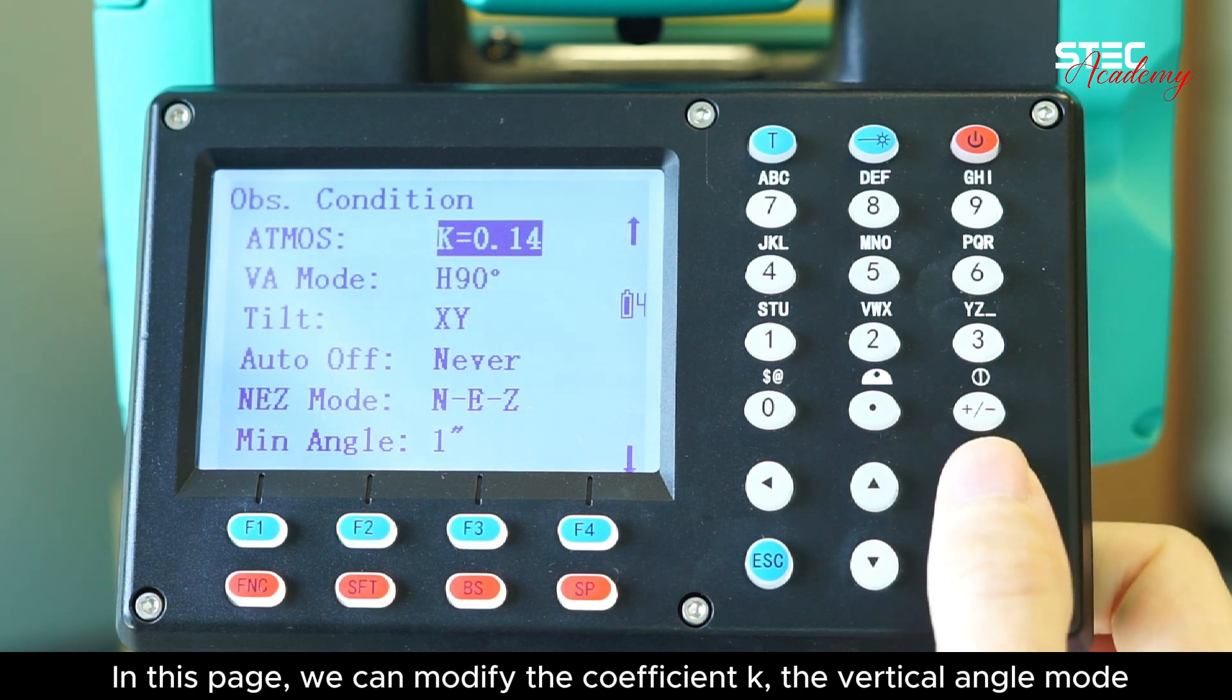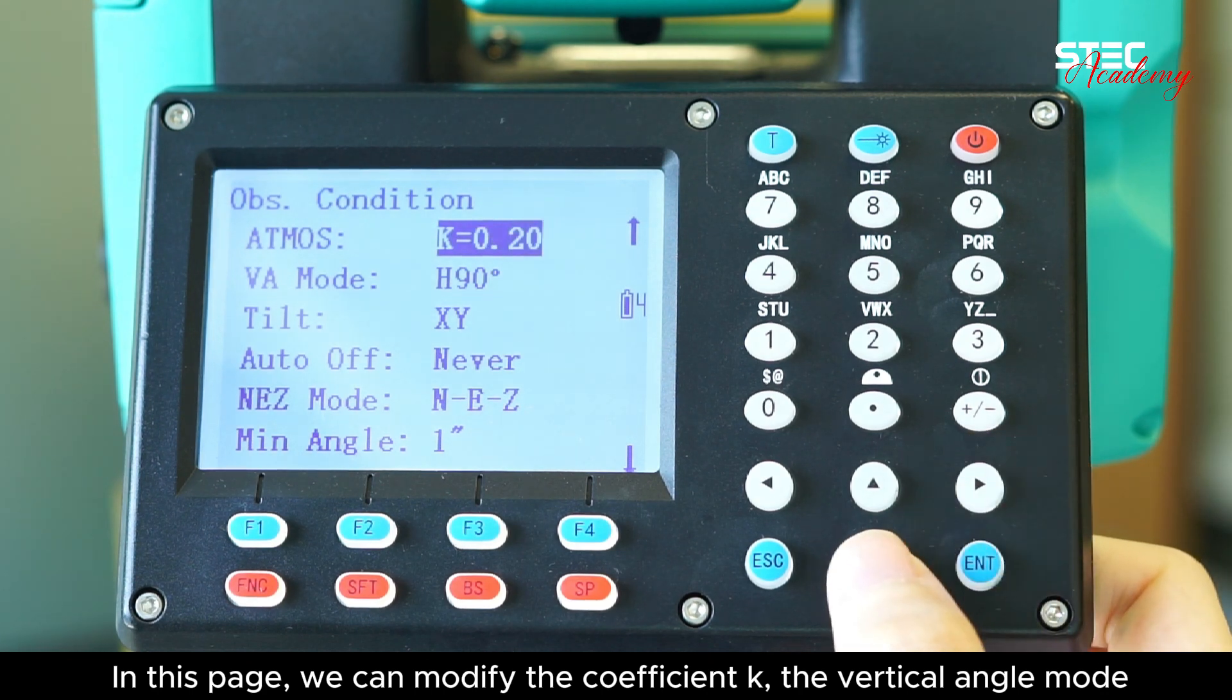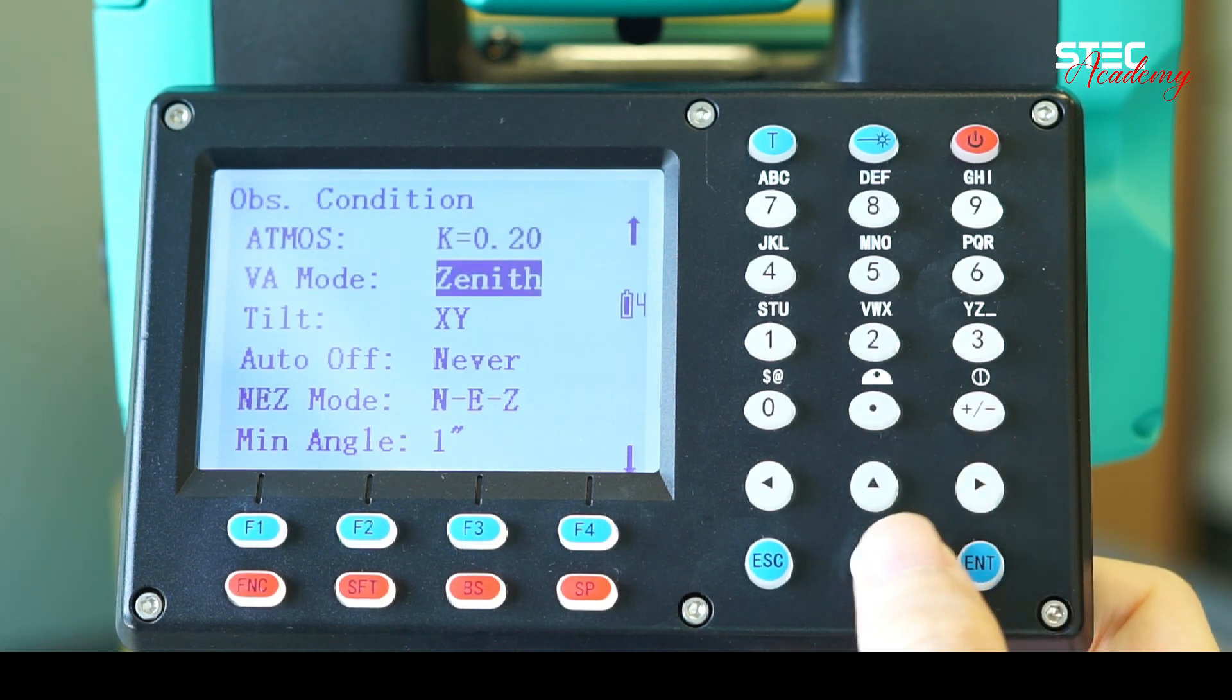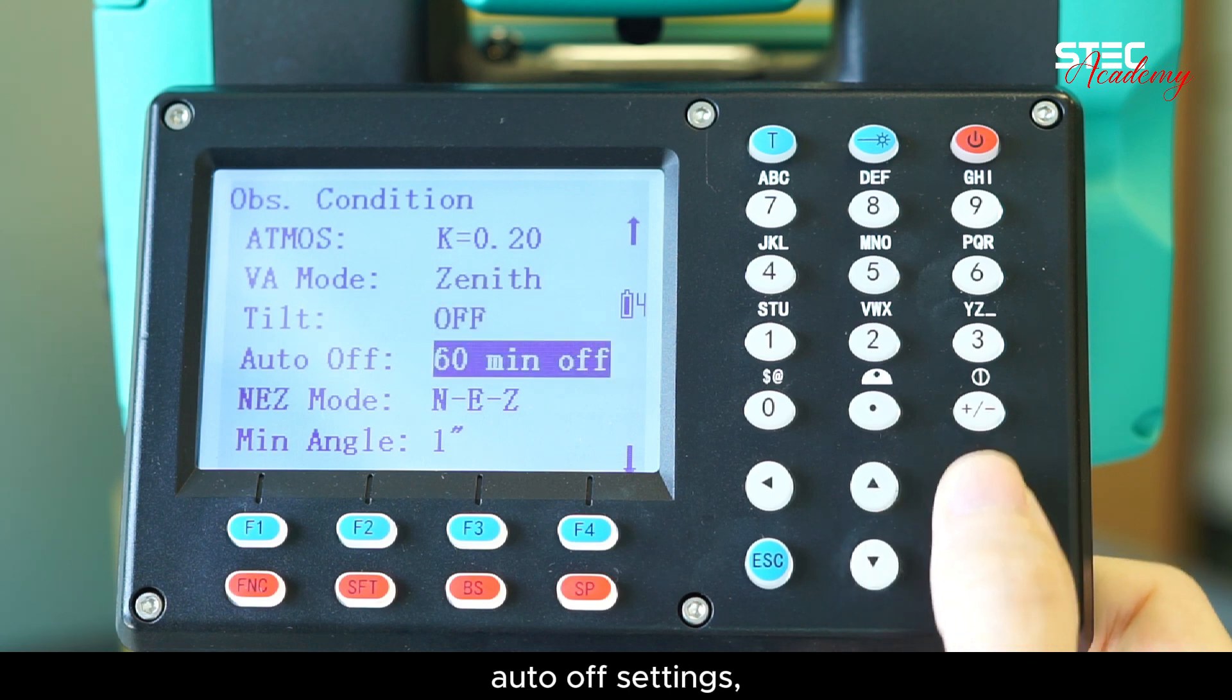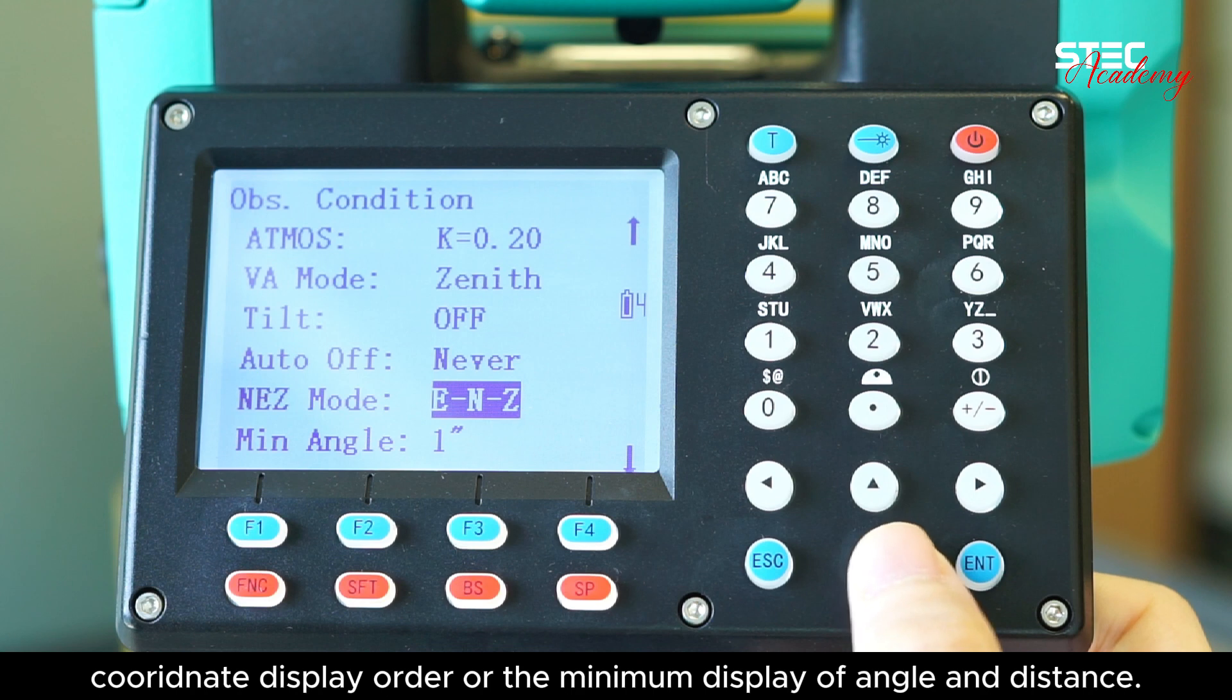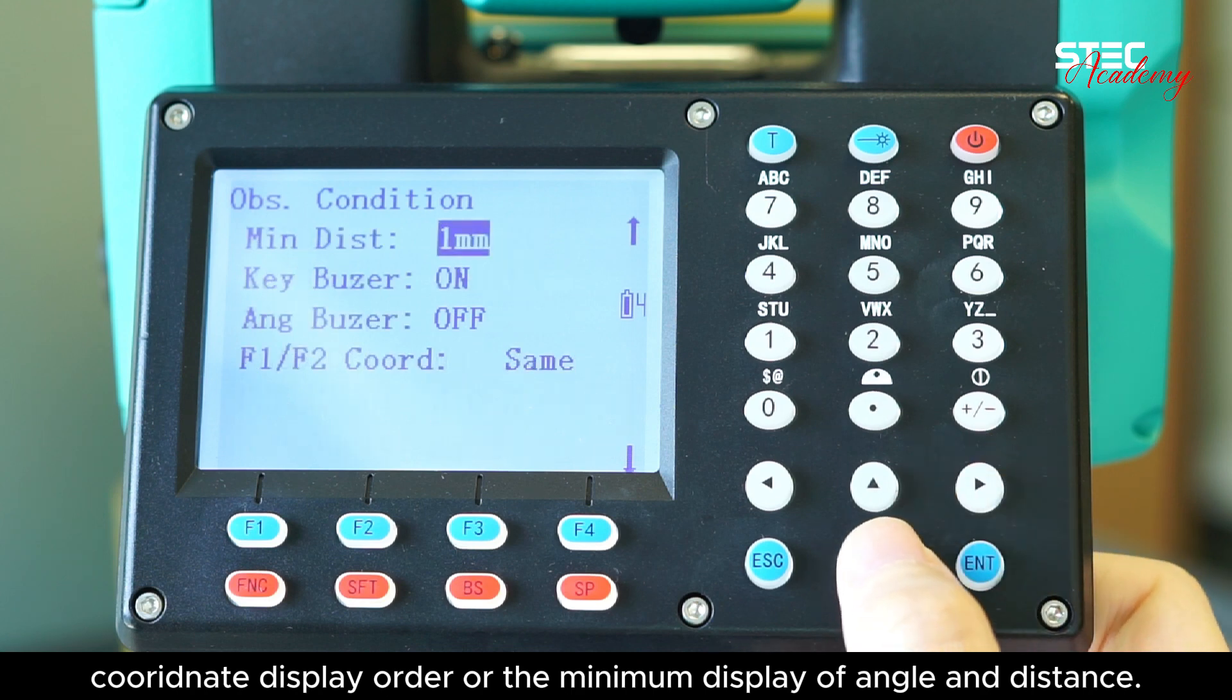In this page, we can modify the coefficient K, the vertical angle mode, turn on or off the tilt sensor, auto off settings, coordinate display order, or the minimum display of angle and distance.